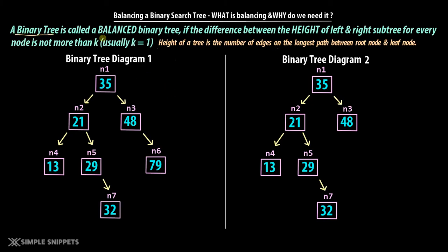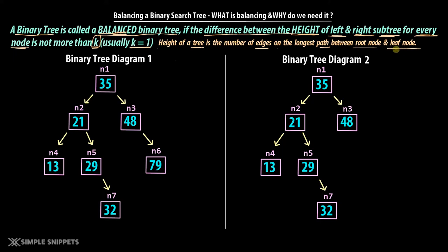A binary tree is called a balanced binary tree if the difference between the height of the left and right subtree for every node is not more than k, and usually k is 1. The height of a tree is the number of edges on the longest path between the root node and the leaf node.